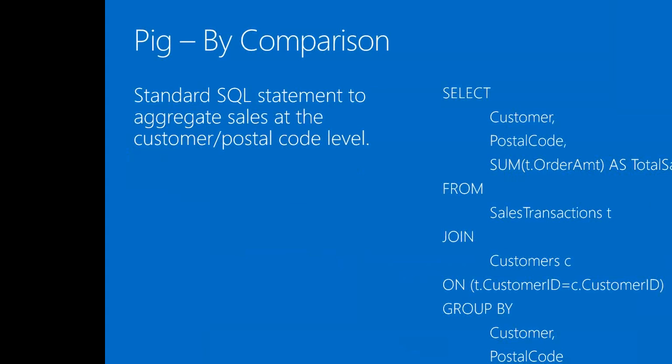To get a better grasp on how this works, I want to do some side-by-side comparisons — slide by slide, because I couldn't fit it all on a single slide and have it readable. So I want to start with a basic standard SQL statement like you could see in any data warehouse project. We have some sales transaction data, some customer data, and we want to aggregate that up at the customer postal code level. This is just a run-of-the-mill aggregate SQL statement — using GROUP BY, with an aggregate SUM function. Pretty standard stuff.